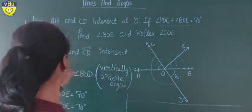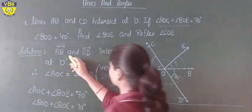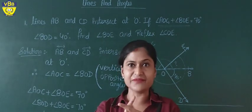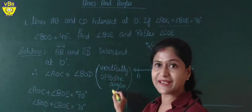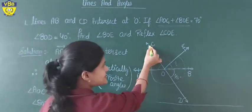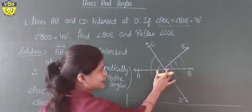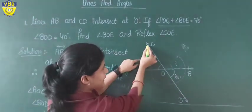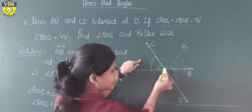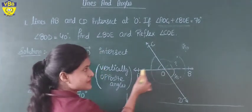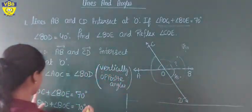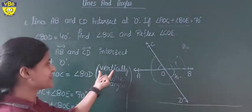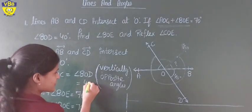So let's start. As we know, AB and CD intersect at point O. When two lines intersect, their vertically opposite angles are equal. So angle AOC is equal to angle BOD. These both are equal and their value is 40 degrees.